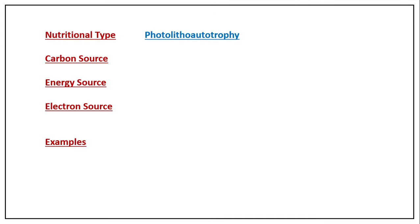For each nutritional type, we will consider carbon source, energy source, electron source, and examples. The first type is photo-litho-autotrophs. The carbon source is CO₂ due to their autotrophic nature; the energy source is light since photo is in the name; and the electron source is inorganic, since litho indicates inorganic electron donors. Based on our prior knowledge, we can easily understand this category.